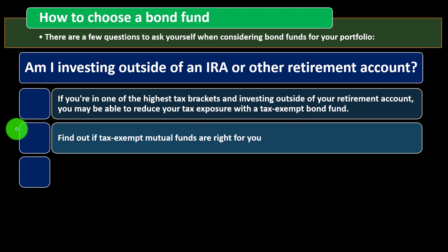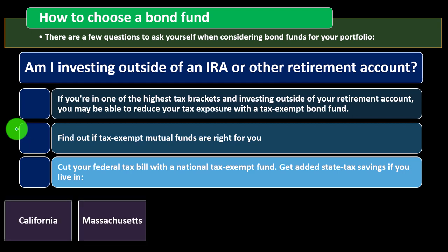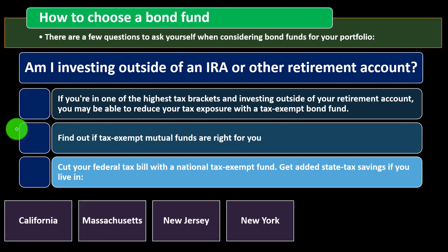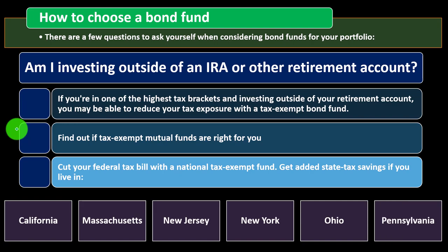We talked about tax-exempt bonds in more detail in prior presentations. You can cut your federal tax bill with a national tax-exempt fund, and get added state tax savings if you live in high-tax states such as California, Massachusetts, New York, New Jersey, Ohio, or Pennsylvania.